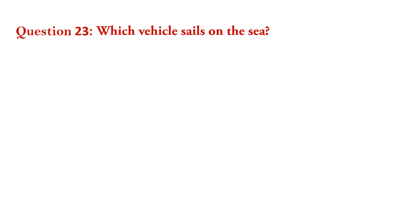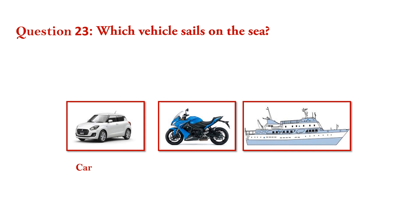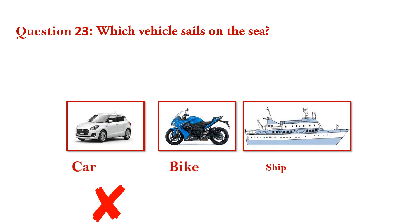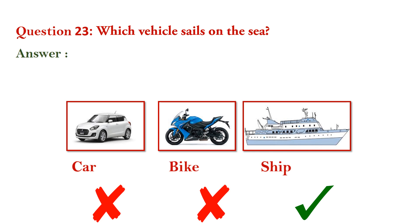Question number 23. Which vehicle sails on the sea? Car — wrong. Bike — wrong. Ship — right. Answer is ship.